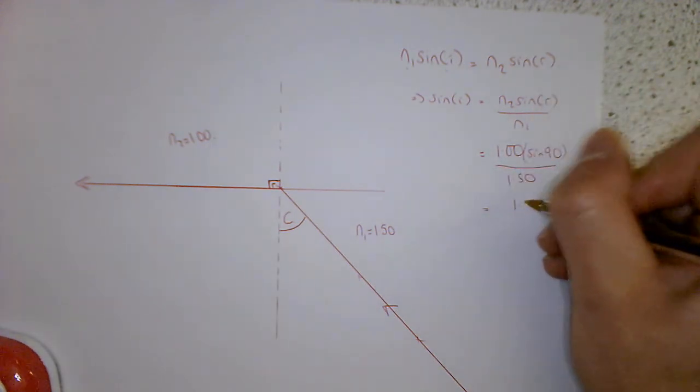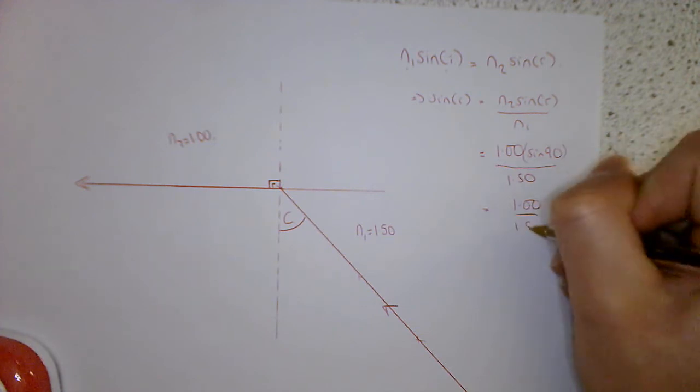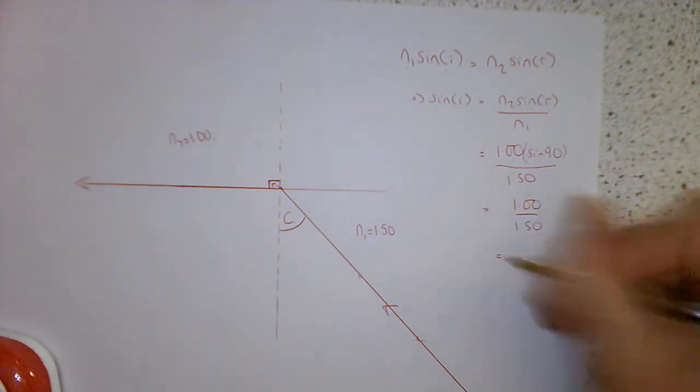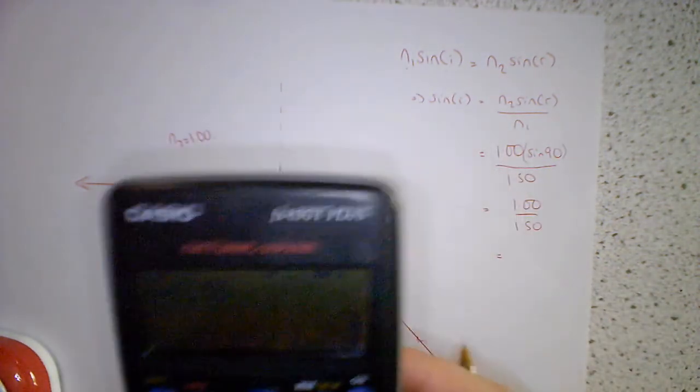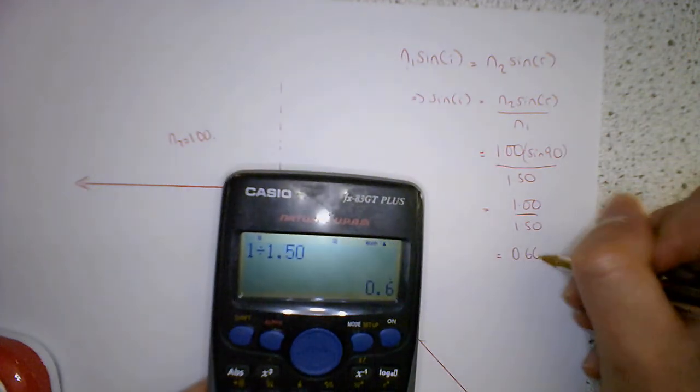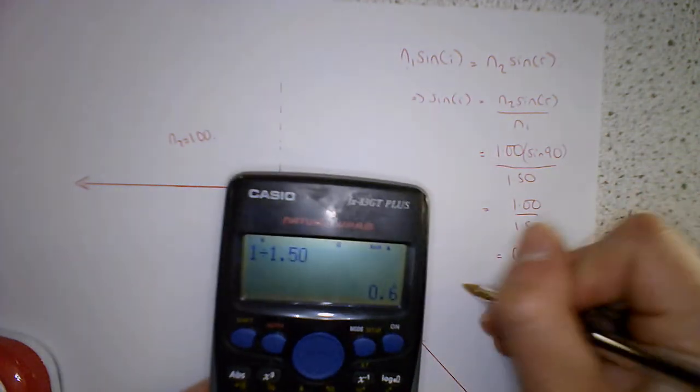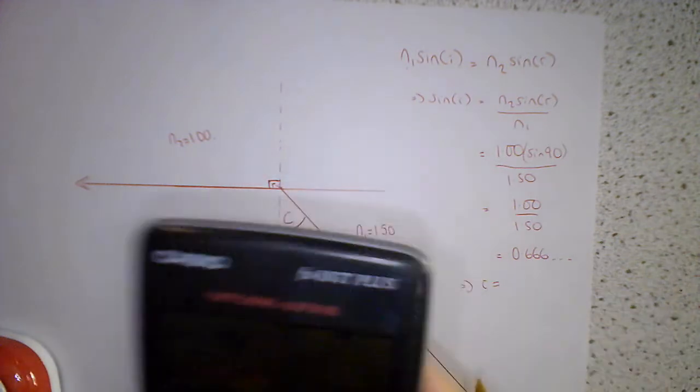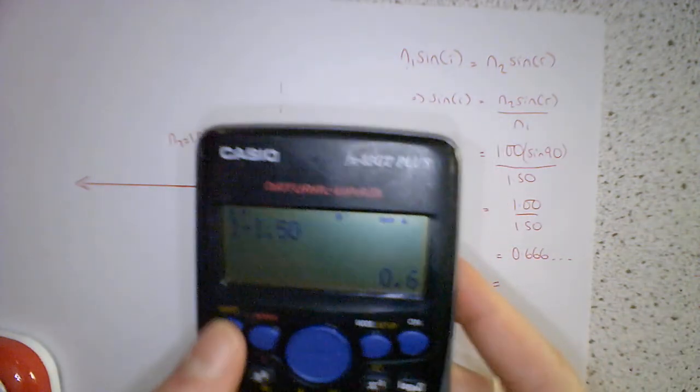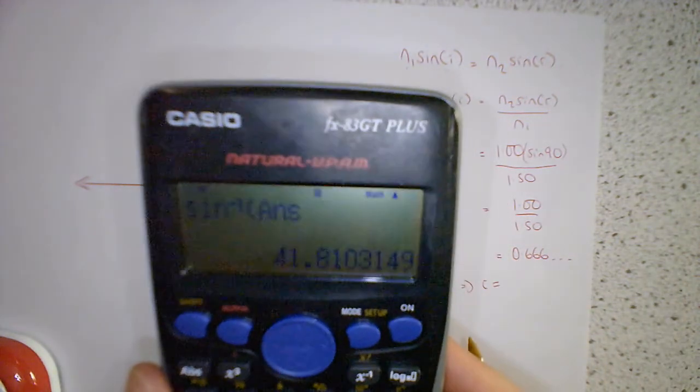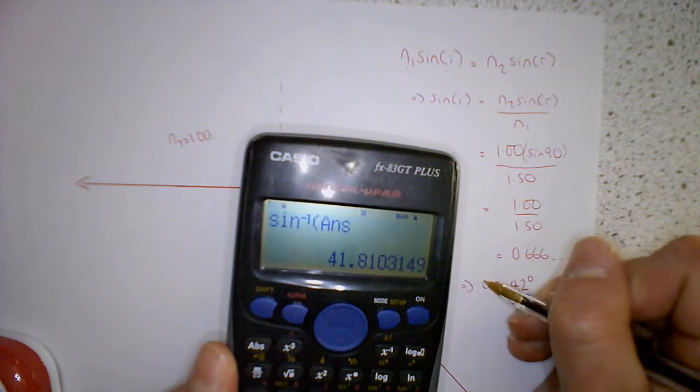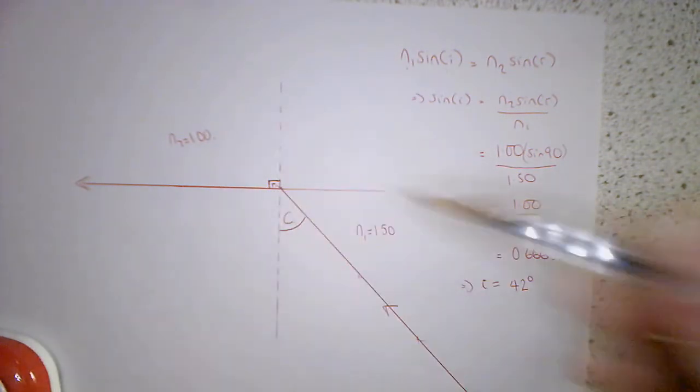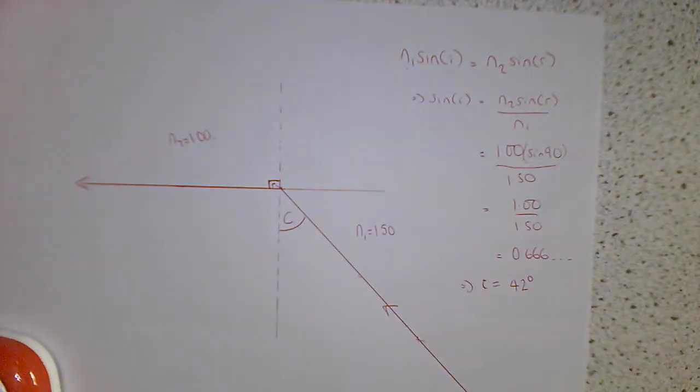So that just ends up being this calculation here. And if I stick that into my calculator 1 divided by 1.5, I probably could have done that in my head, but this is 0.666 blah blah blah. So that means that I in this case if we take the inverse sine of that, so inverse sine answer, we reckon that the angle of incidence in this particular scenario should be 42 degrees.